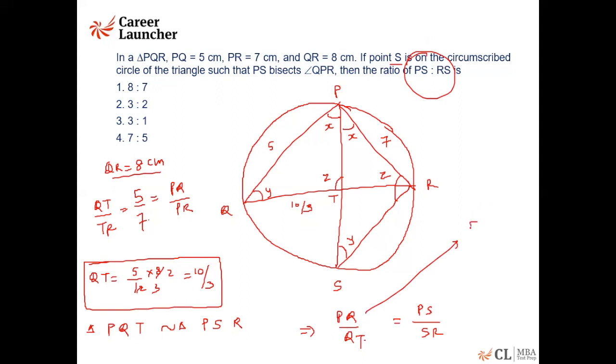PQ is given as 5. QT I already found is 10 by 3. So what we get is the ratio is 3 is to 2. So this must be equal to 3 by 2.